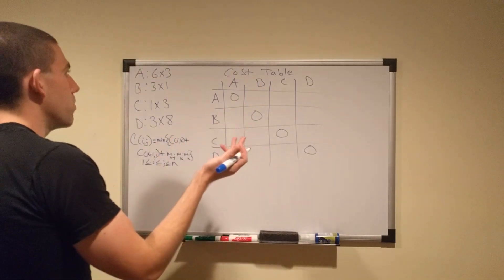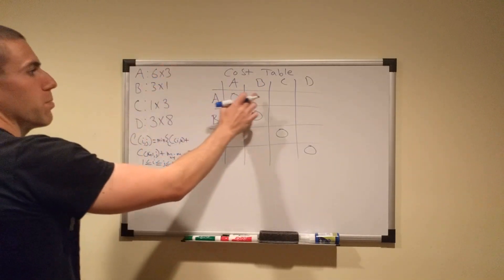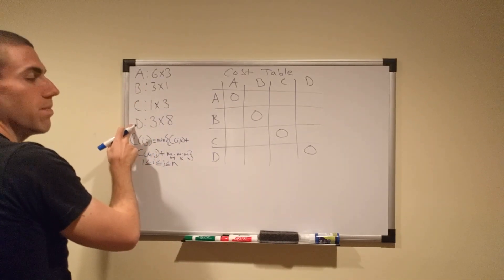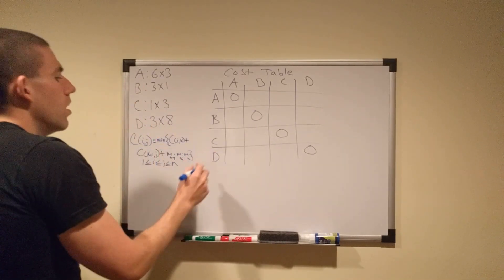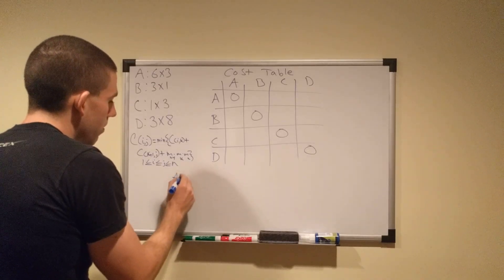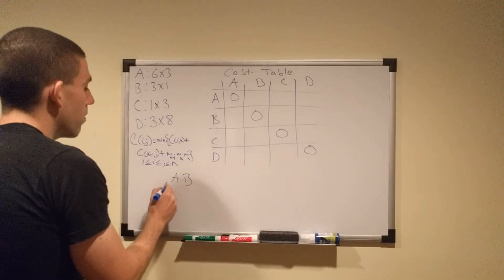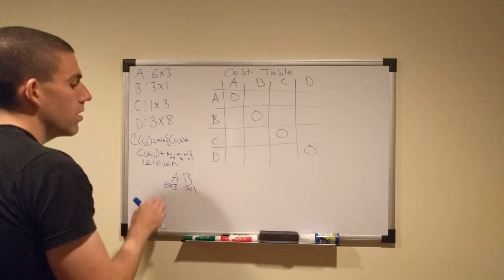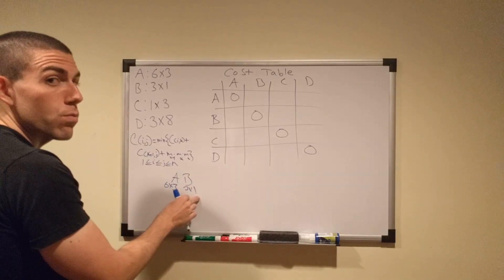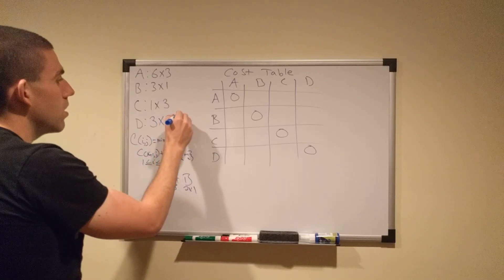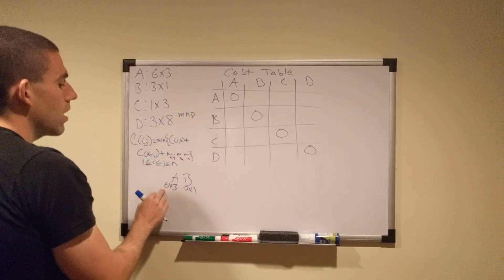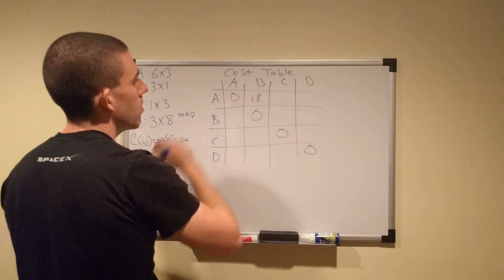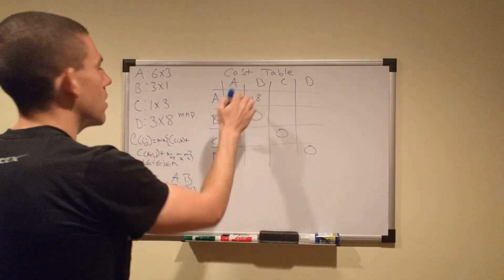We'll start with the twos. We can do three possible twos. So we have A, B, B, C, and C, D. Let's start with A, B. A is six by three, B is three by one. Six times three is eighteen times one. Remember we have m, n, and p. Six by three by one. Eighteen. Eighteen multiplications to compute A times B.